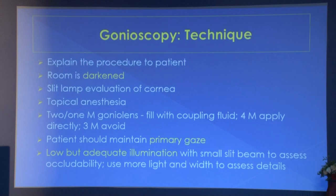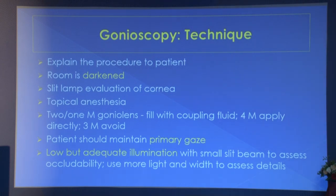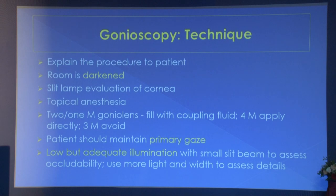For gonioscopy technique: explain the procedure to the patient, darken the room, do slit lamp evaluation of the cornea, use topical anesthesia. A one-mirror goniolens needs coupling fluid whereas the Zeiss four-mirror does not. Avoid the three-mirror gonioscope for this purpose. The patient should maintain primary gaze with low but adequate illumination and small beam to assess occludability. For angle details, use more light and wider beam.